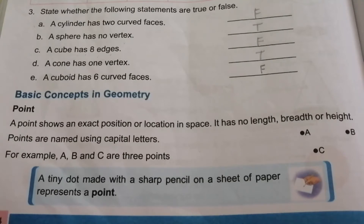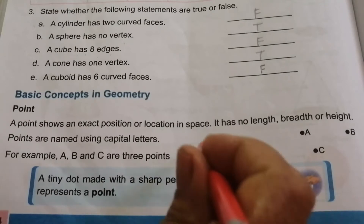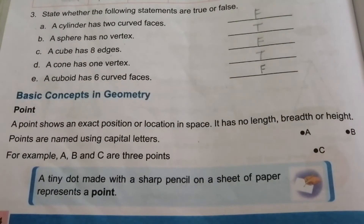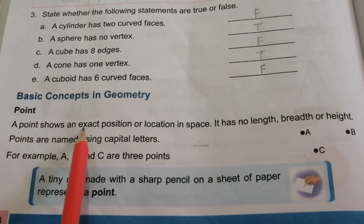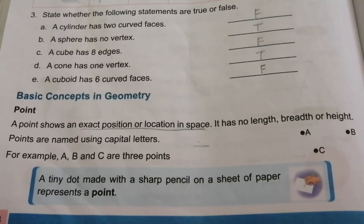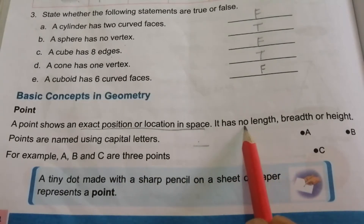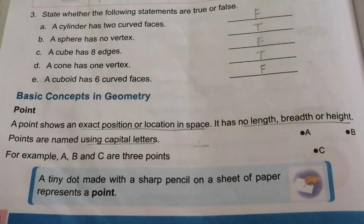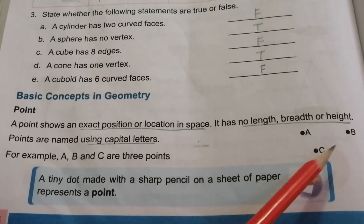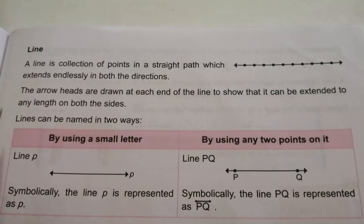The first concept is a point. A tiny dot made with a sharp pencil on a sheet of paper represents a point. A point shows an exact position or location in space. It has no length, breadth, or height. Points are named using capital letters — for example, A, B, C.